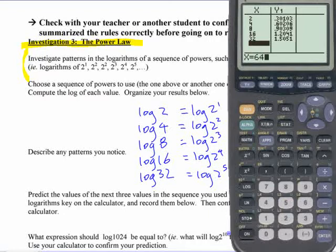What's the next one going to be? If I put a 64 in there, what's its logarithm going to be if you follow that pattern? Yeah, 1.806.